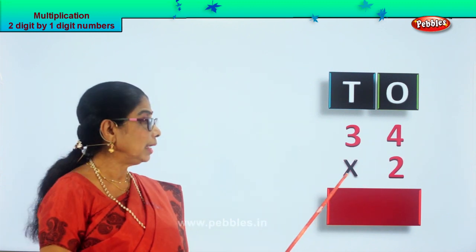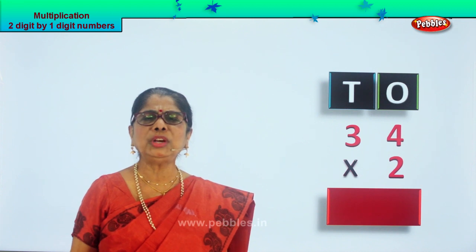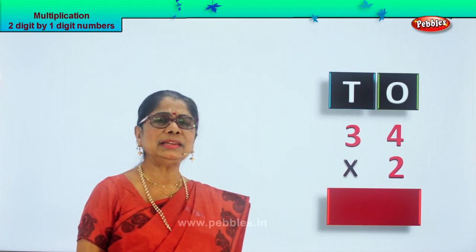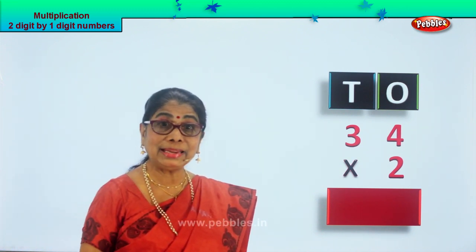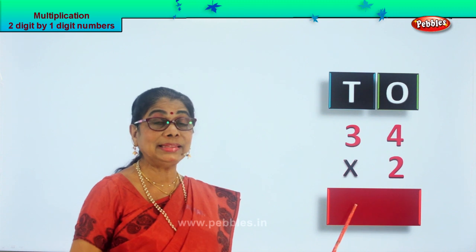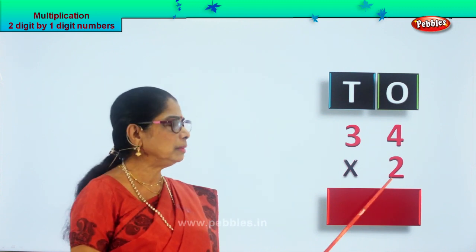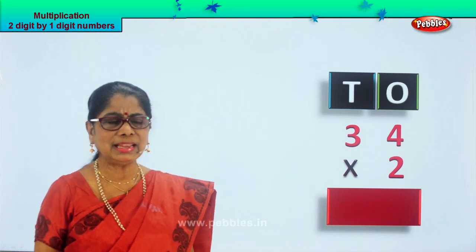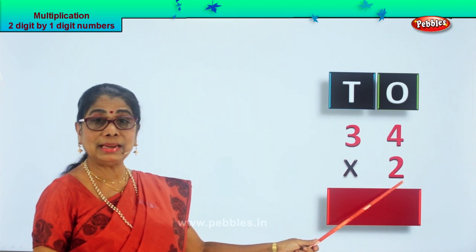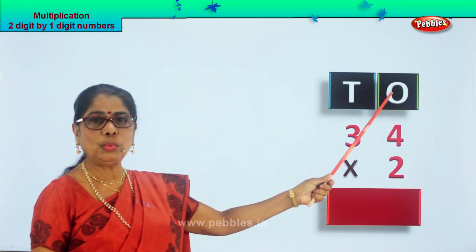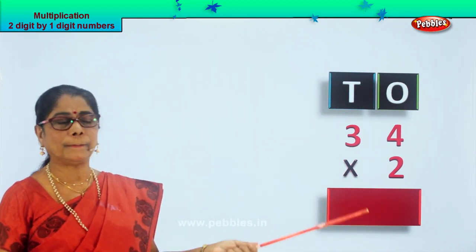So, 34 into 2. We learned that multiplication is repeated addition. We can apply this here together with the tables too. You already know the two times table. First of all, we will multiply the single digit number on the ones side. Always begin with the ones, then go to tens.